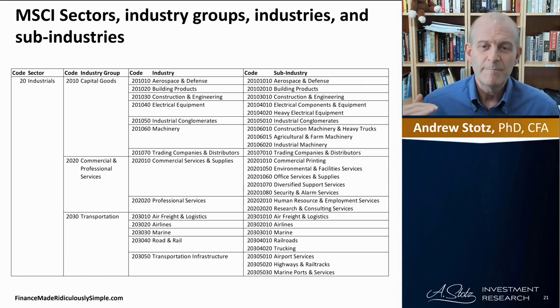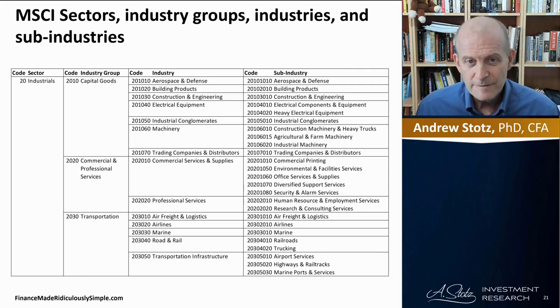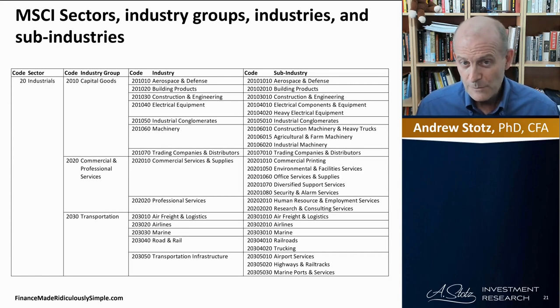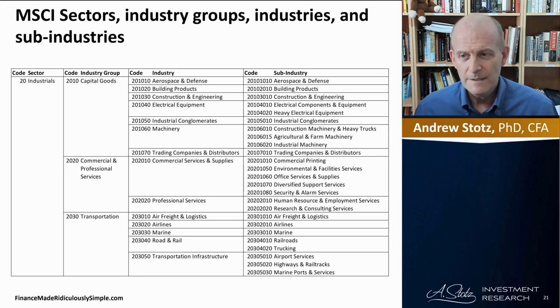The sub-industry is the bottom of the triangle. For example, under industrial → capital goods → machinery, we can see construction machinery, agriculture machinery, and industrial machinery.